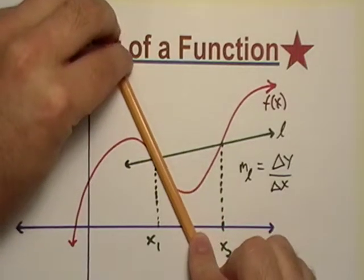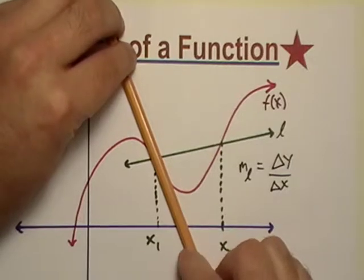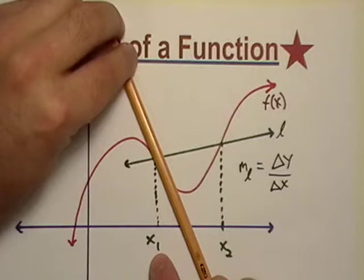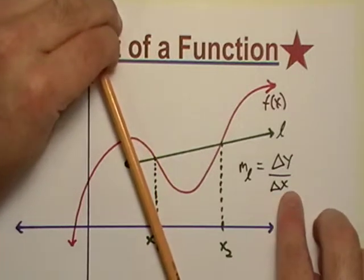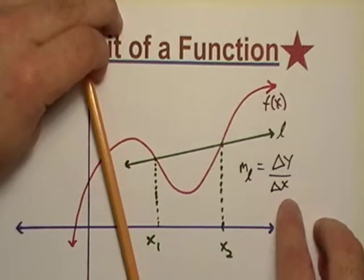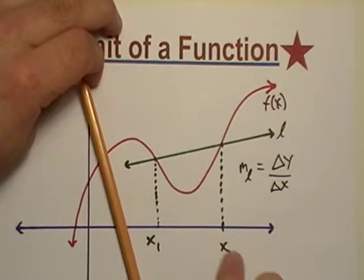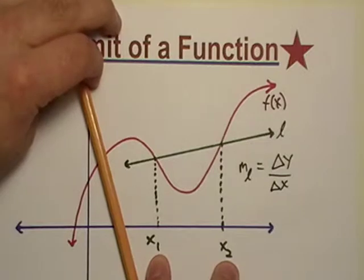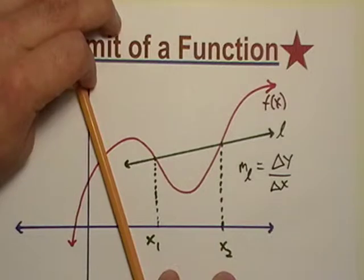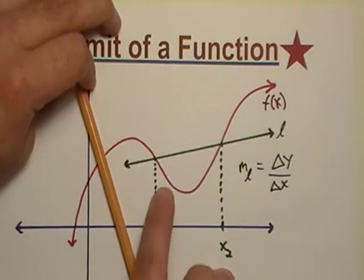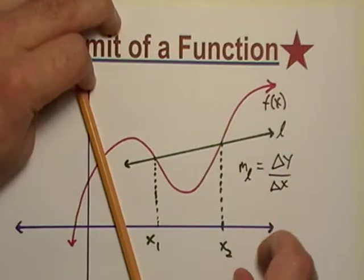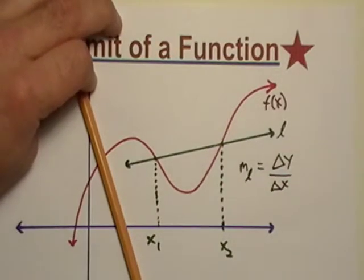So eventually it's going to get to a point where x sub 2 is equal to x sub 1. Now the only problem with that is, while that's happening, the change in x approaches 0, doesn't it? If these two values are exactly the same, then there's no difference between them. The delta x, which just means a difference, it goes to 0. And the same thing would happen in our y direction. So we'd end up with a 0 over 0.